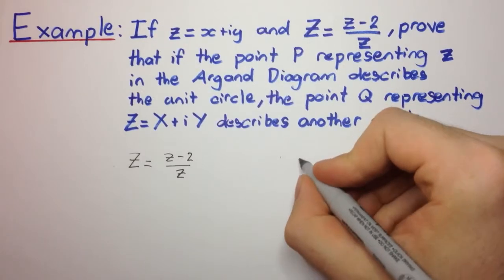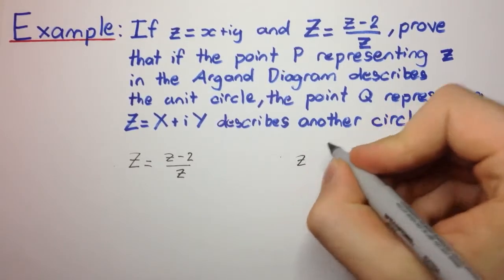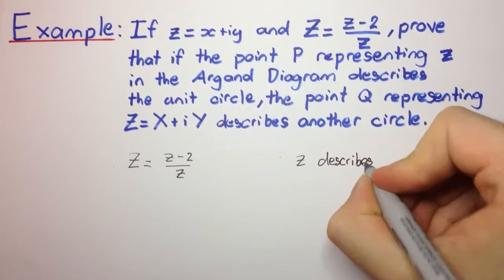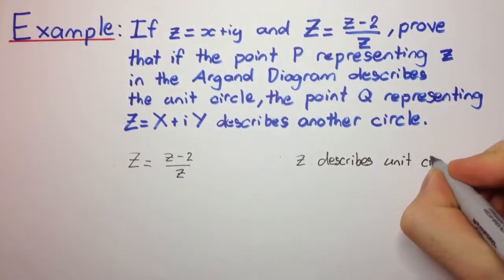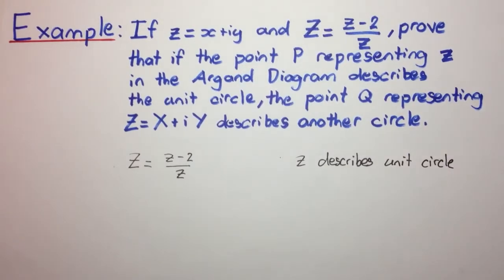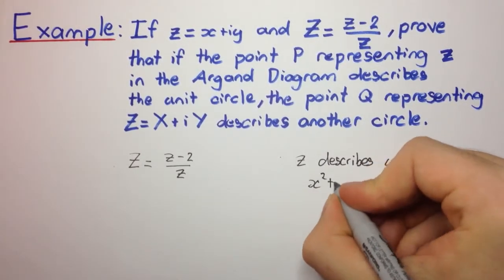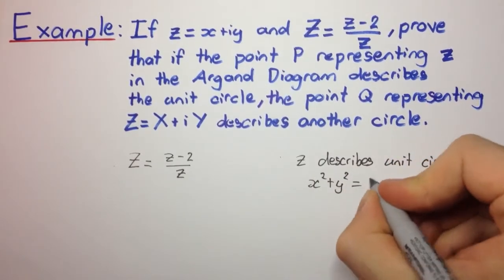So we can say that Z describes unit circle. Well, what does that mean? We can think of this in two ways. We can think of it as x squared plus y squared equals 1.